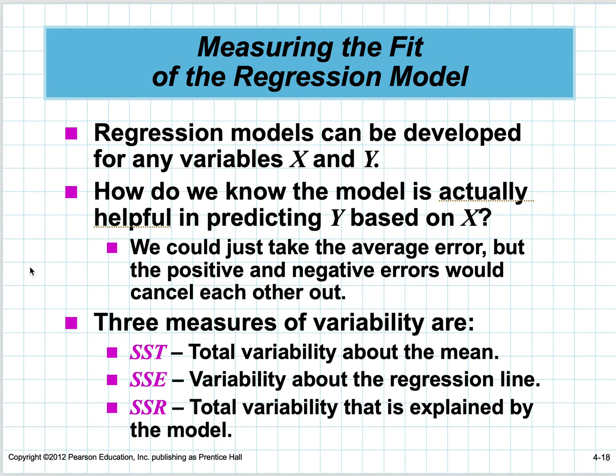Let's look at the next step. There are three measures of variability: total variability about the mean, variability about the regression line, and total variability explained by the model. These are the sum of squares regression, sum of squared error, and sum of squared total.